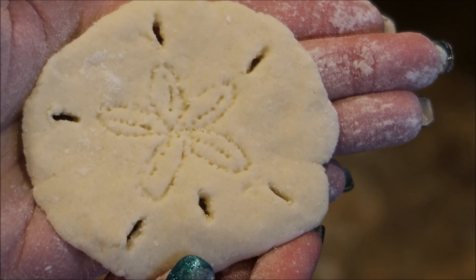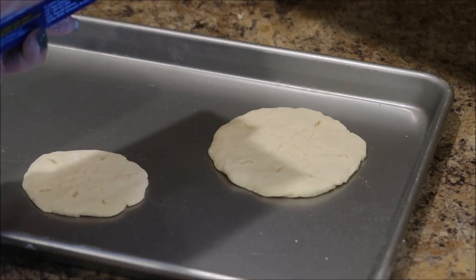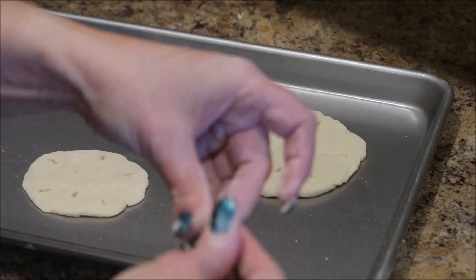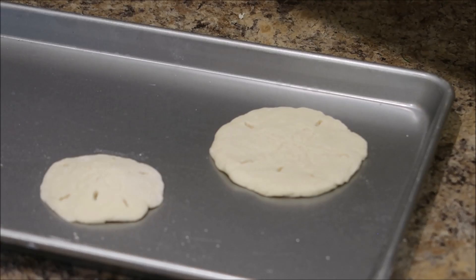Then I placed my sand dollars on a baking sheet and then I'm taking a little bit of aluminum foil. And I'm just going to roll up a little ball and flatten it out and then place that in the center underneath each sand dollar. And this is going to raise up the center and so that will give it a little bit of a domed shape and not make it lay so flat. And that will make it have a much more realistic look.